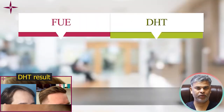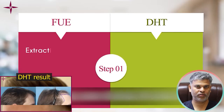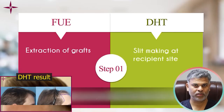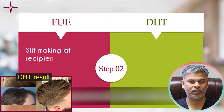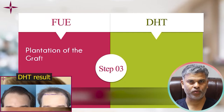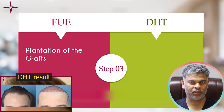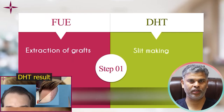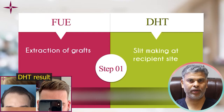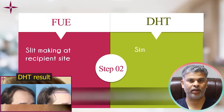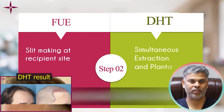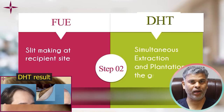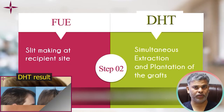In FUE, the first step is extraction of the grafts, the second step is making the sites, and the third step is placing the grafts. In DHT we have reversed everything. The first step in DHT is making the sites, and the second and third together is simultaneous extraction and placement of the grafts.